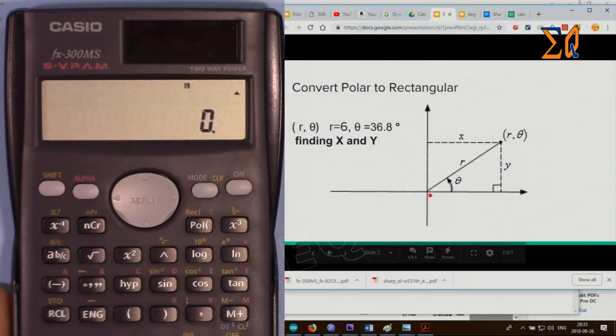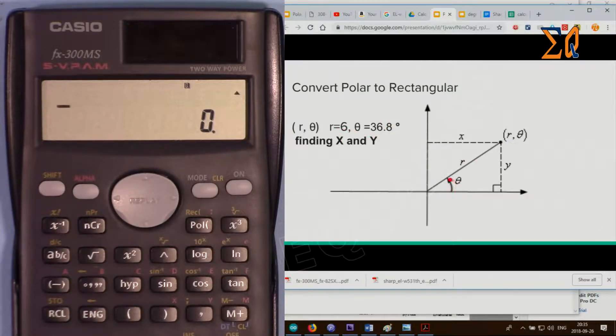Let's say you have a magnitude R of 6 and an angle of 36.8 degrees from this reference point. You want to find the point X and Y.